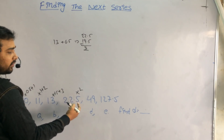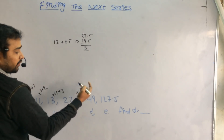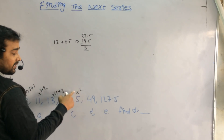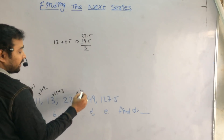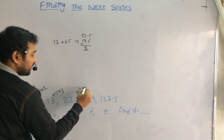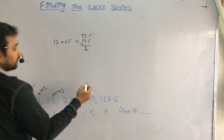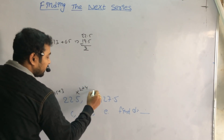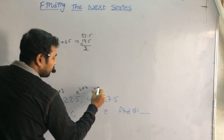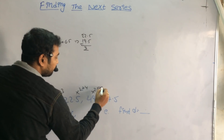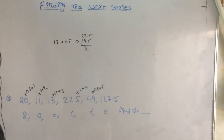What comes next? Into 2: 22 into 2 is 44, plus 1 is 45, plus 4 is 49. Then in the same way, multiplied with 2.5 plus 5.